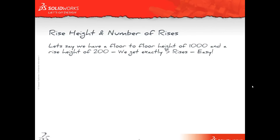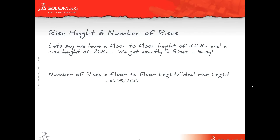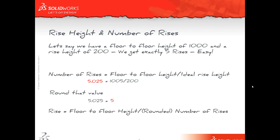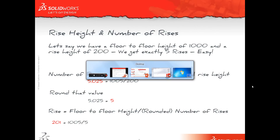But that's not always the case, and when it's not the case, we need to do some rounding up. Our number of rises equals the floor-to-floor height divided by our ideal rise height. So if we have a floor-to-floor height of 1005 divided by 200, that gives us 5.025 rises. We round that value, so 5.025 becomes 5. Then our rise height equals the floor-to-floor height divided by the rounded number of rises — so 1005 divided by 5 gives us a rise height of 201. We can actually build that intelligence into SolidWorks.